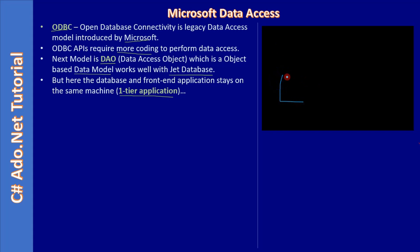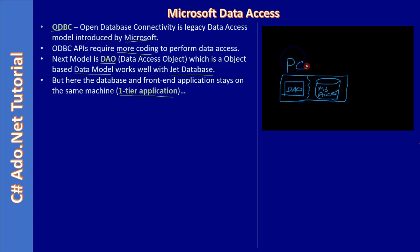For example, consider a file-based database such as MS Access. The Data Access Object sits between the database and your front-end application. Both reside on the same machine — that is why we call it a one-tier application. It sends commands, accesses the data, data is retrieved, and then using DAO you display the data.